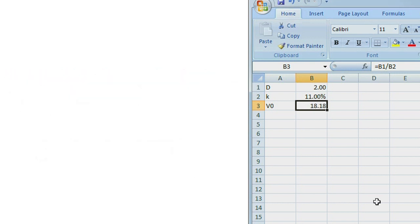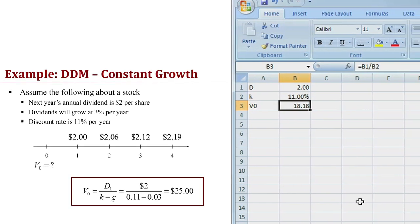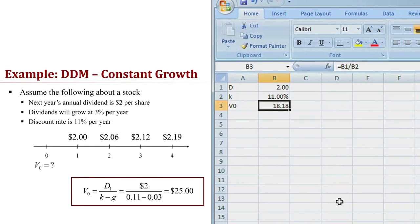Now let's modify the spreadsheet that we had for the constant dividend and model using Microsoft Excel the constant growth dividend model. So again, we'll start out by entering in the cell labels, the dividend to be received a year from now, the discount rate, and now we need a growth rate as well. So the dividend to be received a year from now is $2. The discount rate is 11%, and the growth rate that we're going to assume is 3%.